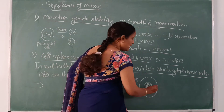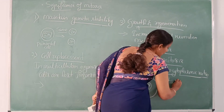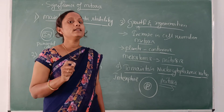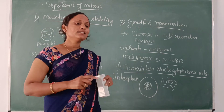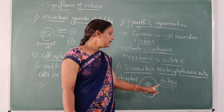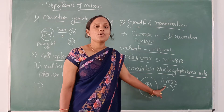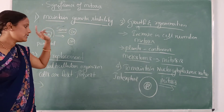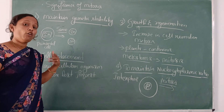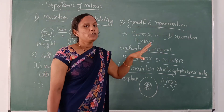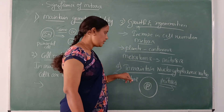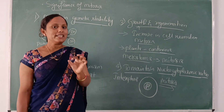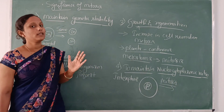If the cell remains as such, it will not be considered normal. So there should be some process which maintains the nucleus and cytoplasmic content ratio. To maintain that, the cell should undergo mitosis. When the cell undergoes mitosis, the cell size, cytoplasmic content, and nuclear content will be balanced. So to balance the nuclear content and cytoplasmic content, the cell should undergo the process of mitosis. These are the significances of mitosis: first, to maintain genetic stability; second, to replace the lost cells; third, mitosis results in growth and regeneration; and fourth, it is helpful in maintaining the nucleocytoplasmic ratio in each and every cell.